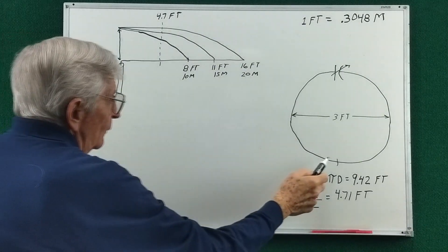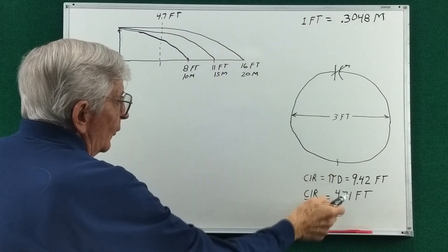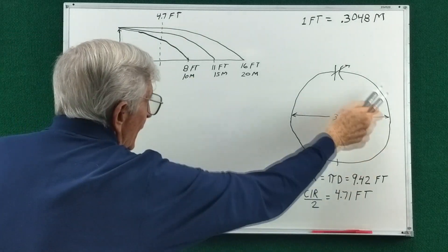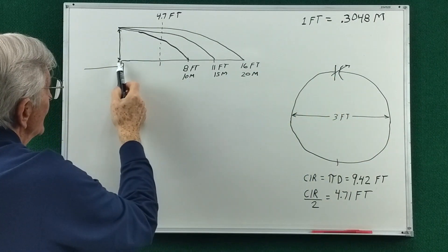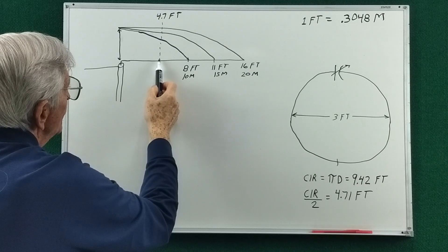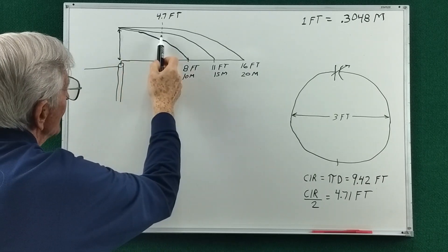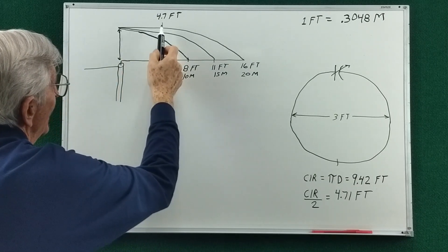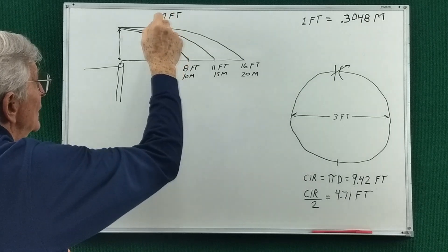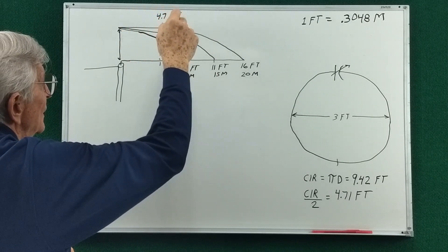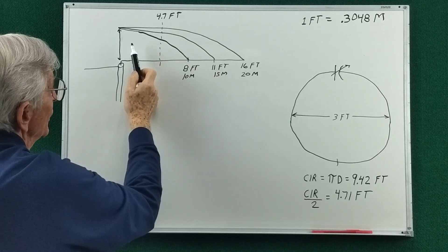So we were 4.71 feet around here, so we moved from the center out to here. And you can see at 20 meters there would be almost no change in the current.